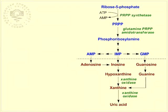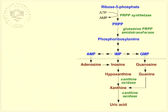Different mutations in the two regulatory enzymes in this pathway — phosphoribosyl pyrophosphate synthetase and glutamine phosphoribosyl pyrophosphate amidotransferase — are the cause for increasing of their activity. This leads to the synthesis of larger amounts of purine nucleotides, and when they are degraded, a greater quantity of uric acid is formed.